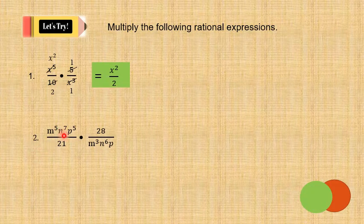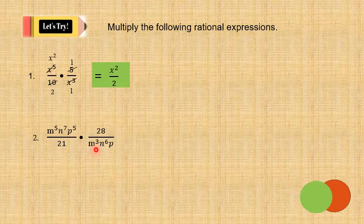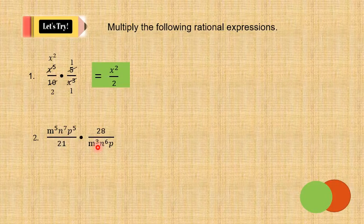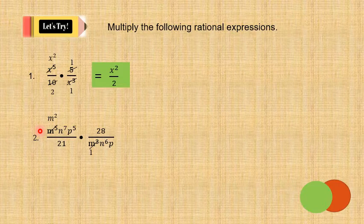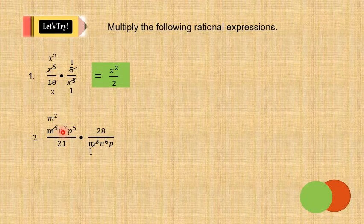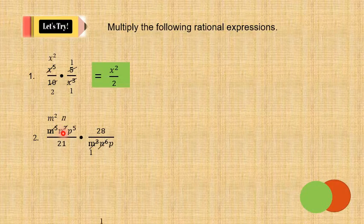Number 2: m⁵n⁷p⁵ over 21 times 28 over m³n⁶p. Now let's go first to the m terms. m⁵ and m³ — the GCF is m³. We're going to divide both sides by m³. So the answer is 1 for m³ and m² for the other. Then for n⁷ and n⁶, divide both sides by n⁶ because this is the GCF. Just subtract the exponents: n⁷ divided by n⁶ gives n, and n⁶ becomes 1.